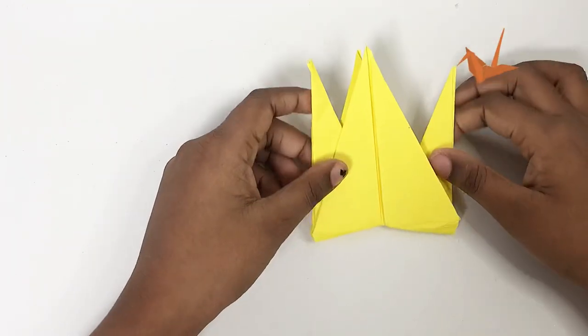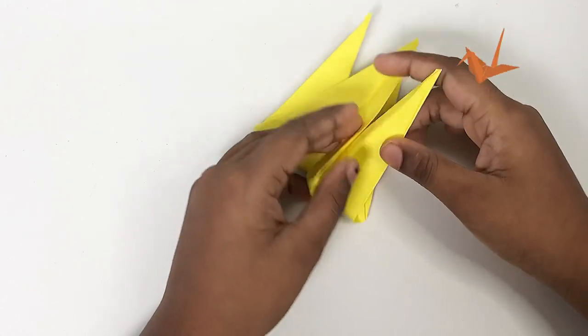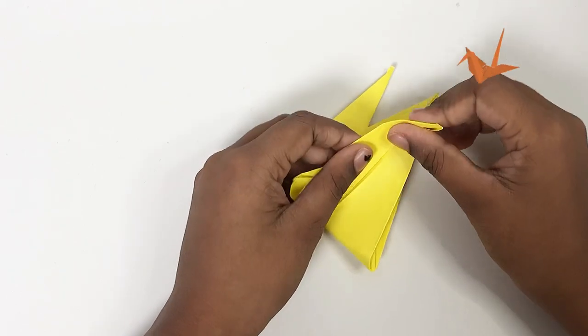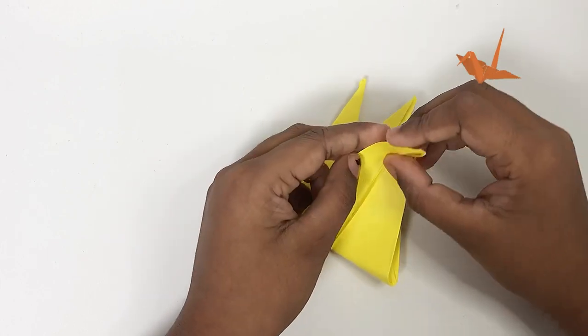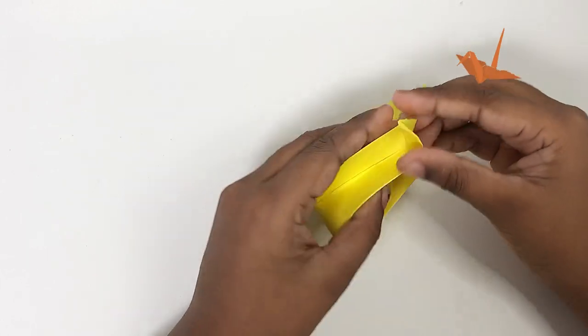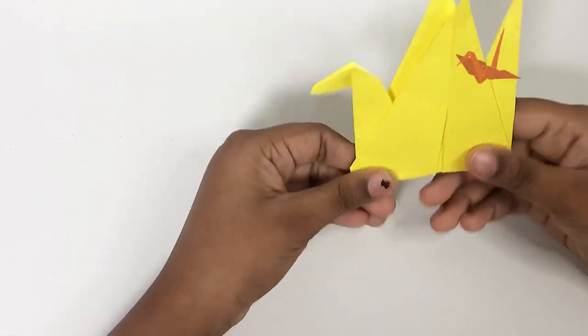Now it should look like this. So, you have to take it like this and again open it. Then take only a bit. Maybe a bit more. Yeah. And then close it to get the head of your crane.